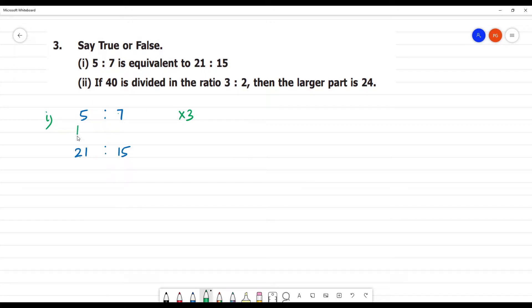But this is the cross, this is direct. So this is multiplied by 3. Let's say, 15 is to 21, this is correct.